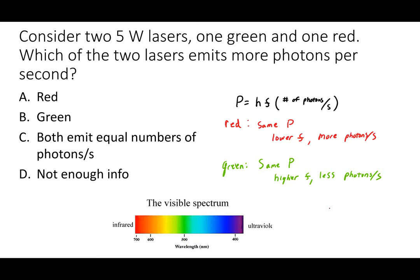Here's a question I really like: if I have a 5-watt green laser and my friend has a 5-watt red laser, who's laser is producing more photons? Even though both produce the same power, each photon's energy is different. Red light has a lower frequency, so each individual photon carries less energy. Since power is energy over time, the same power with less energy per photon means more photons per second. So the red laser emits more photons per second.